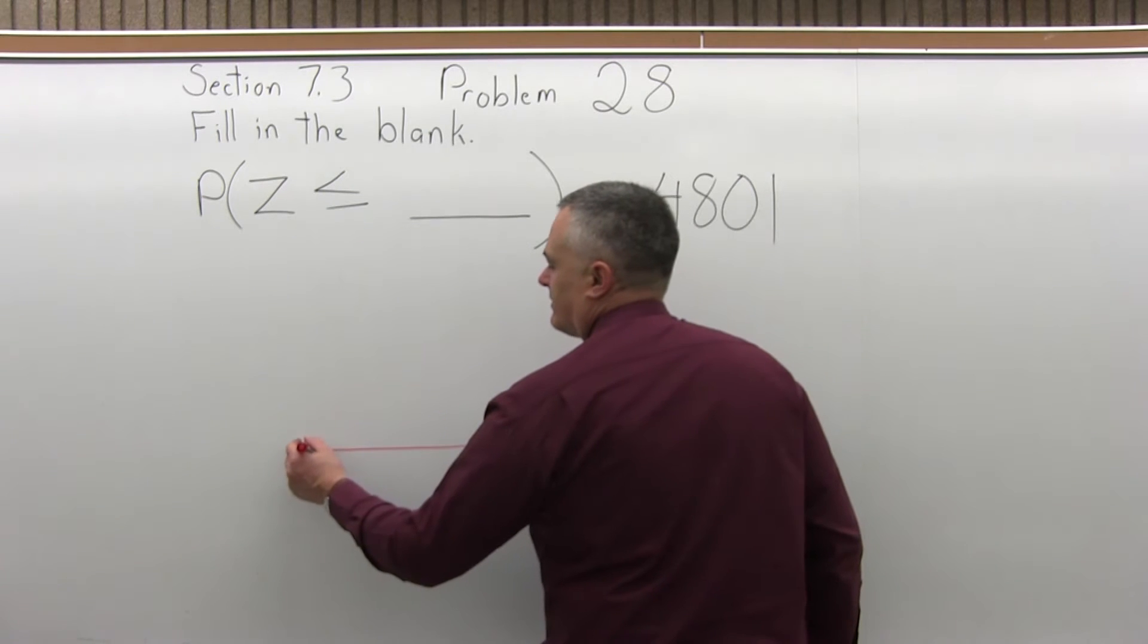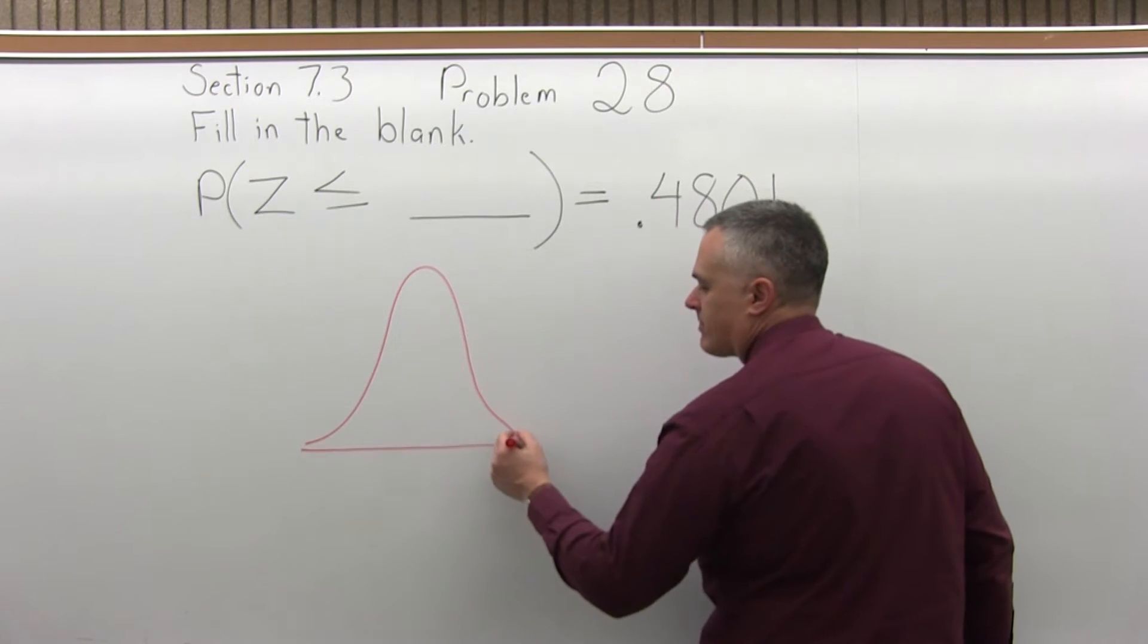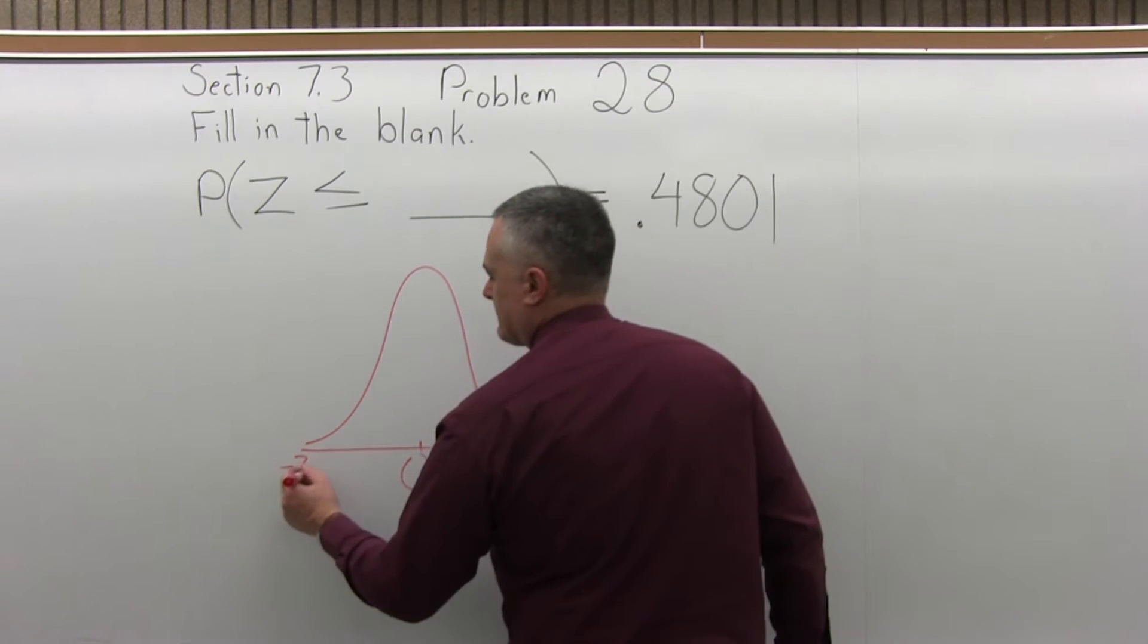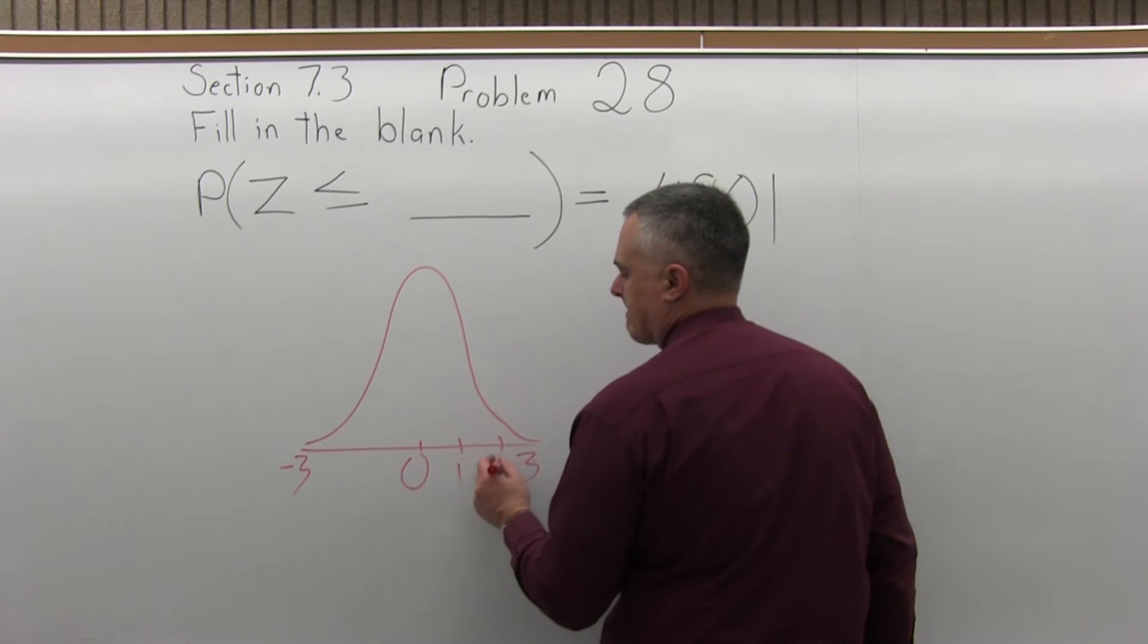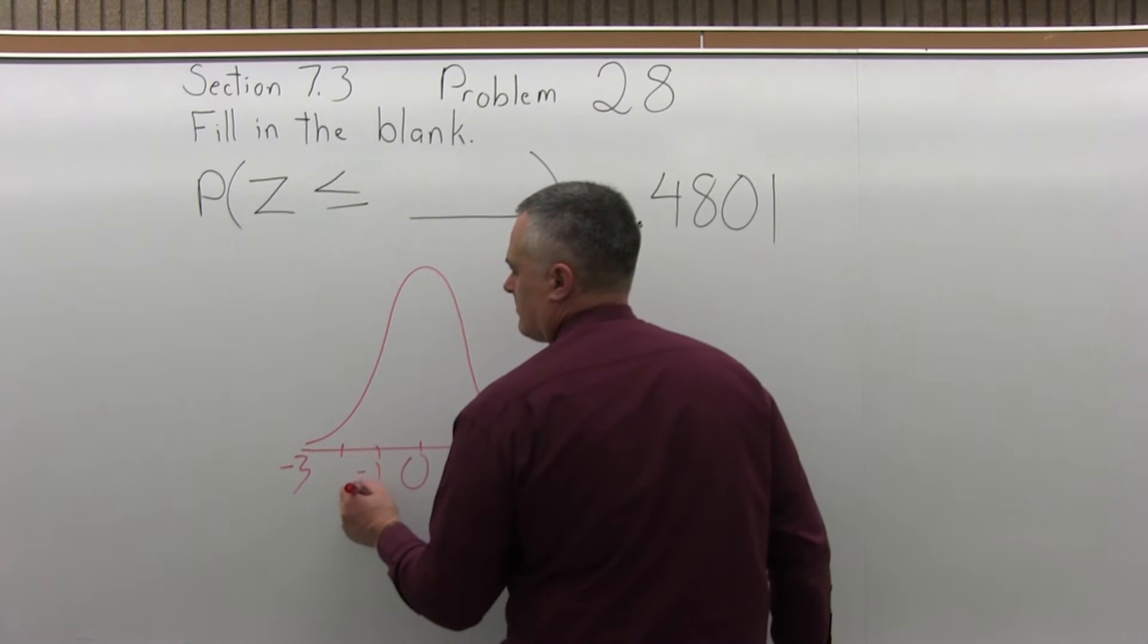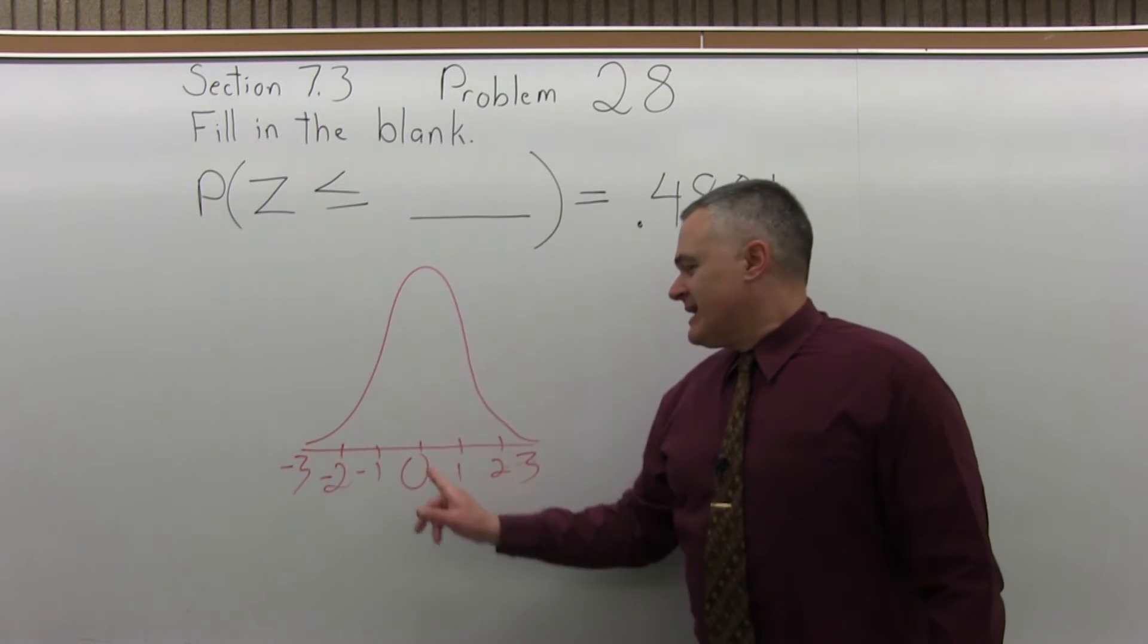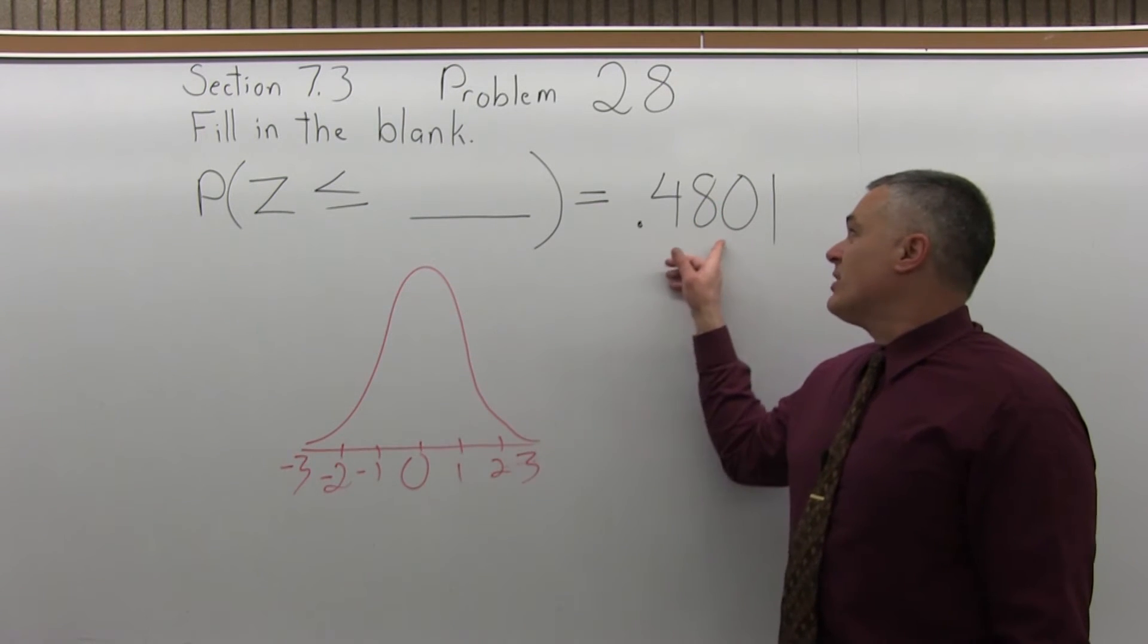let's draw a bell curve. The probability of being less than some value is .4801.